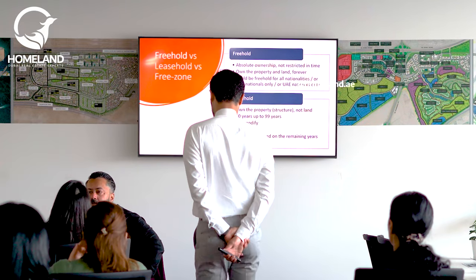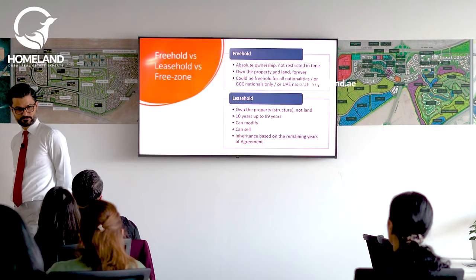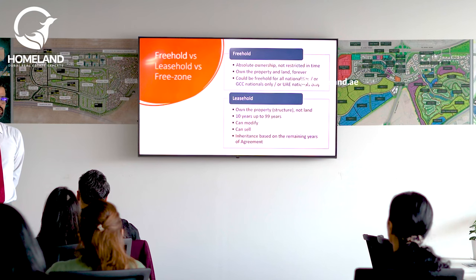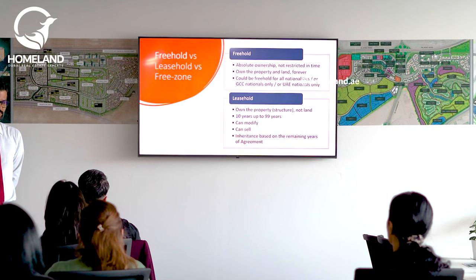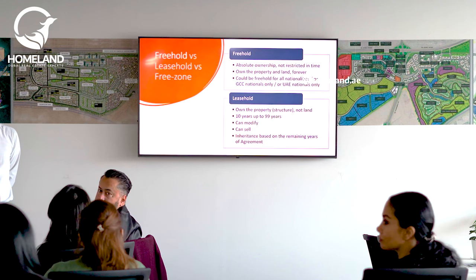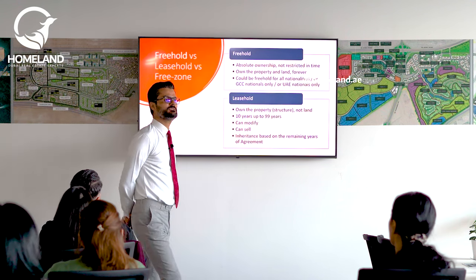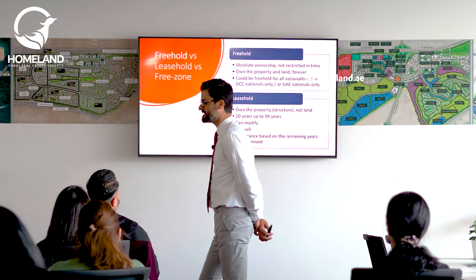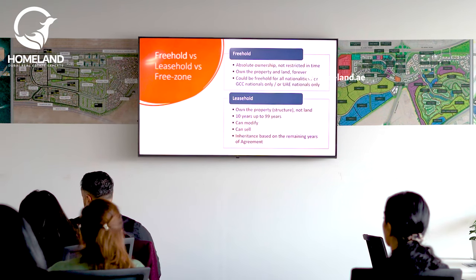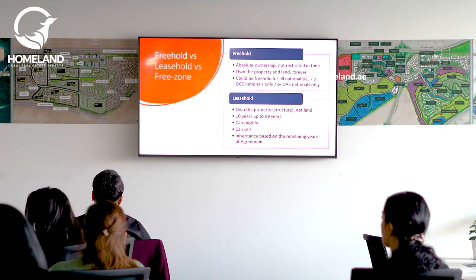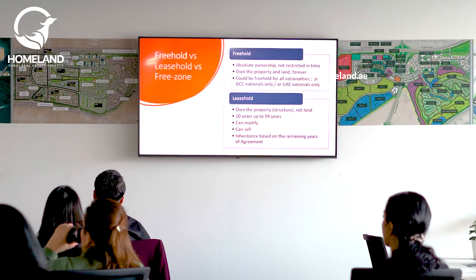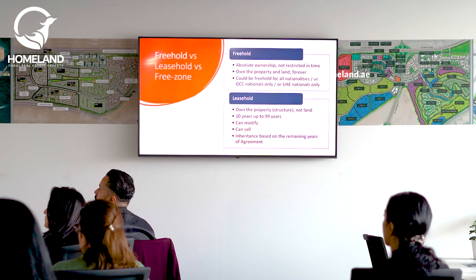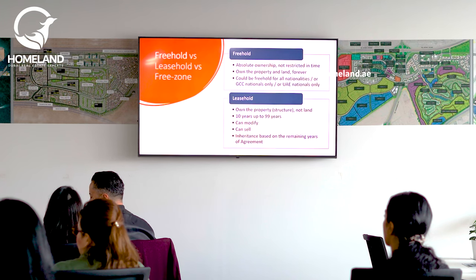How does leasehold work? It doesn't have to be 99 years — leasehold can be one year, 35 years, 30 years, 90 years. There are many areas in Al-Qusis where you have a one-year lease. In leasehold, you own the structure but you don't own the land. You are a tenant on the land, but the structure belongs to you. You have rights to modify the property, sell your right, and own it for the limited period — 10, 50, or 99 years. Inheritance also applies: if you die, it goes to your sons, children, and wife.